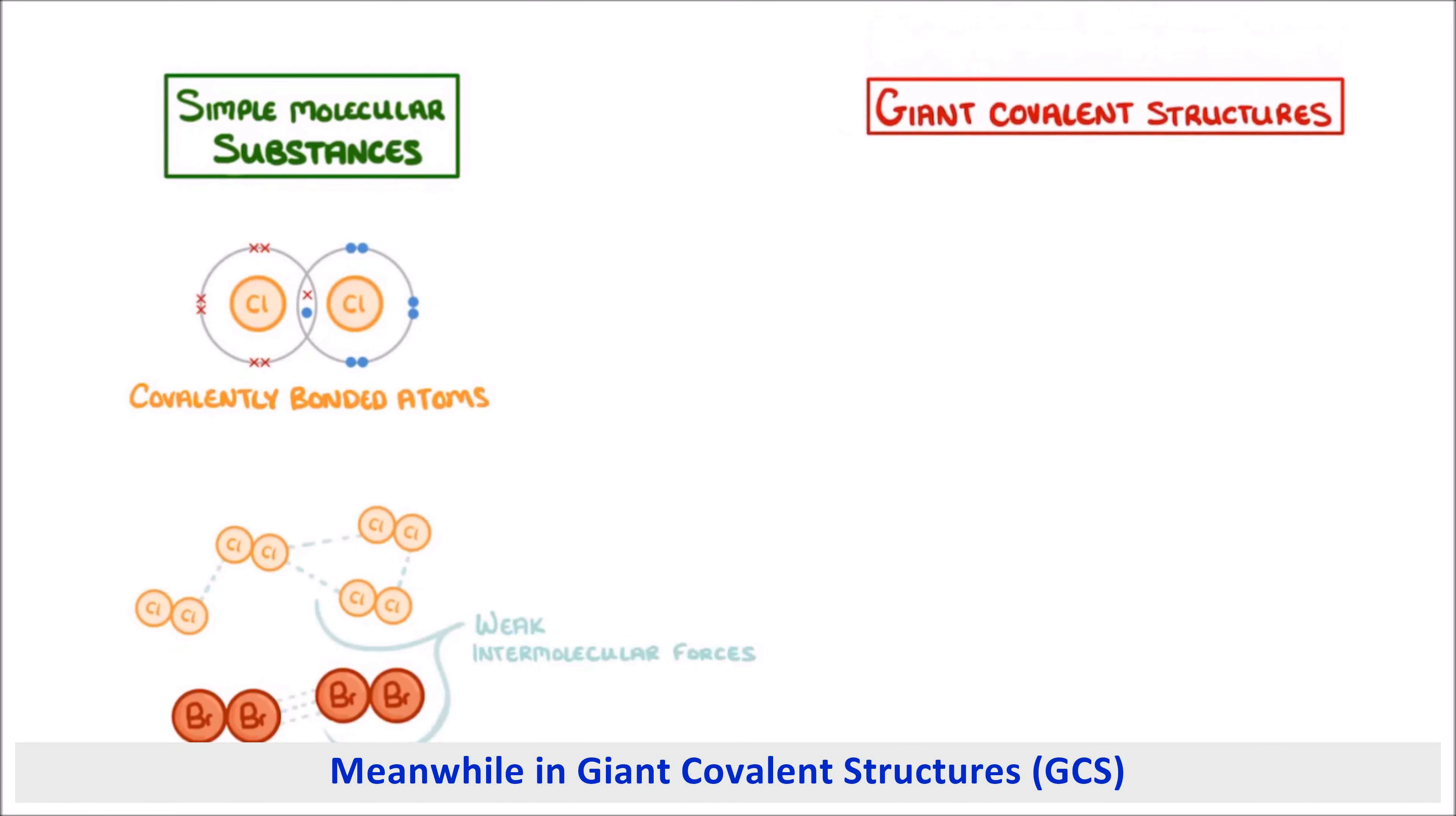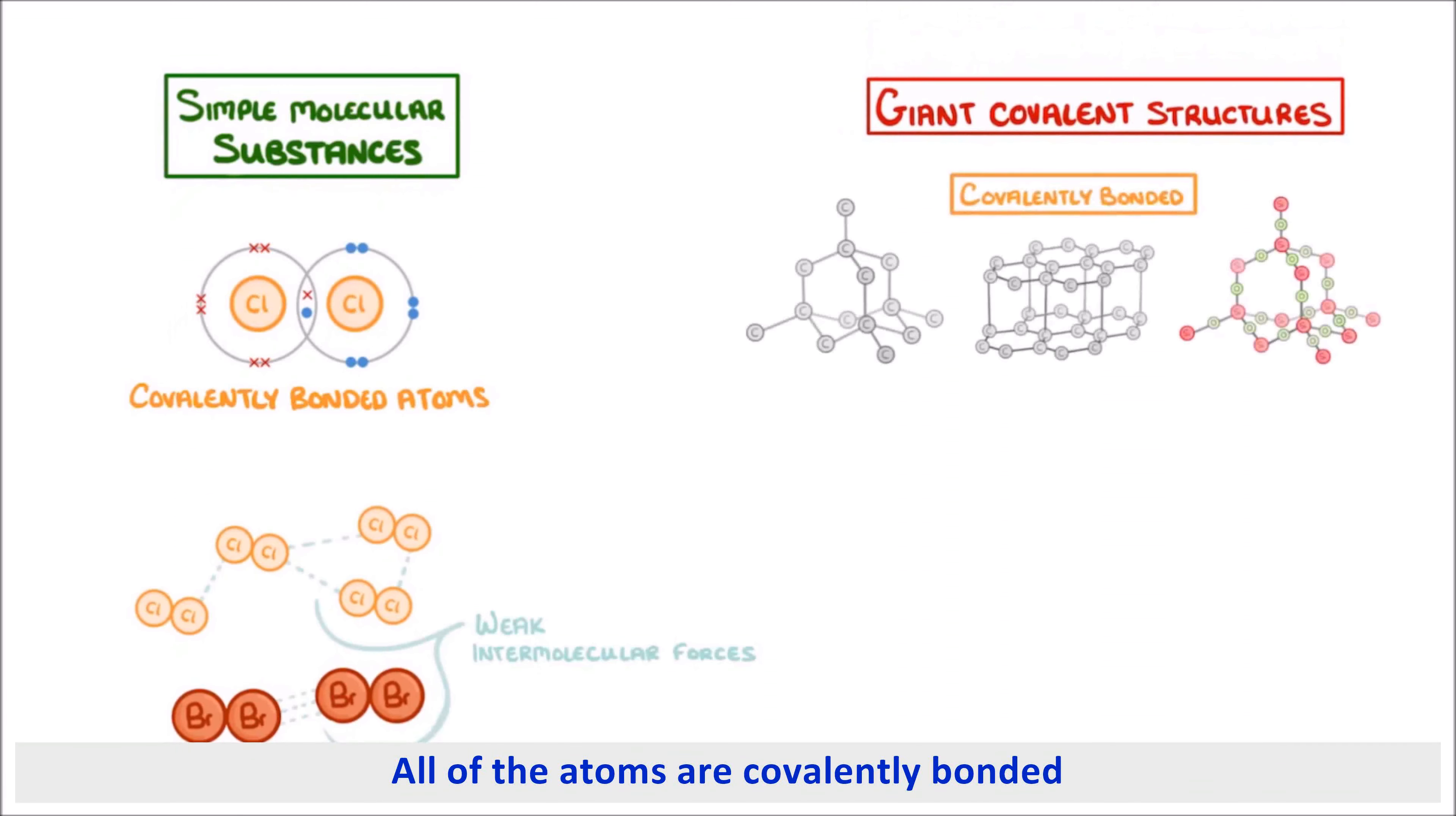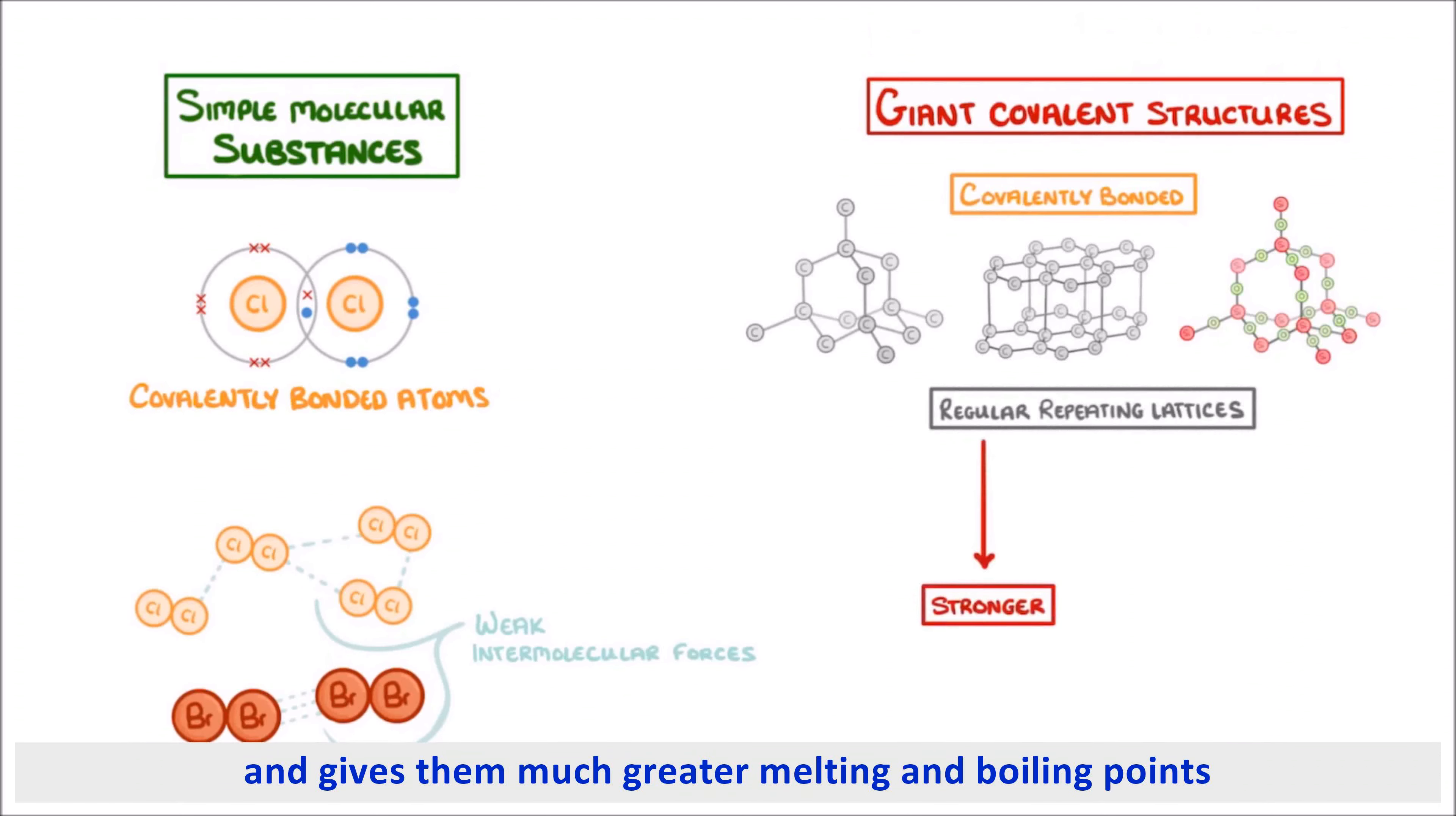Meanwhile, in giant covalent structures, all of the atoms are covalently bonded in regular repeating lattices, which makes them much stronger and gives them much greater melting and boiling points.